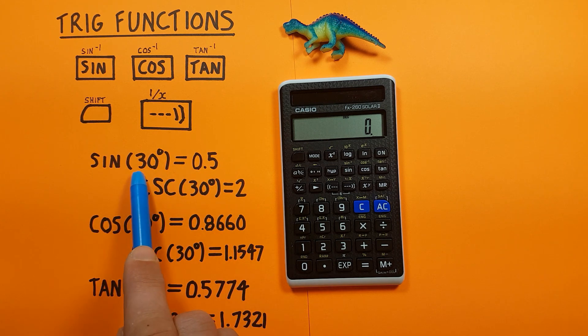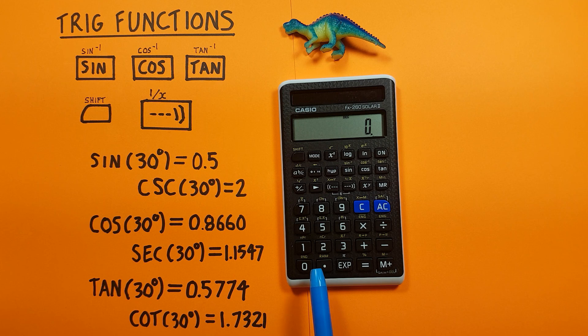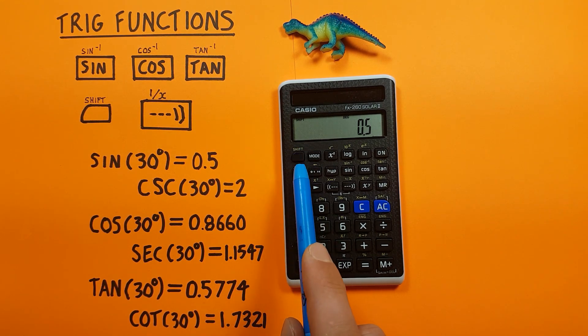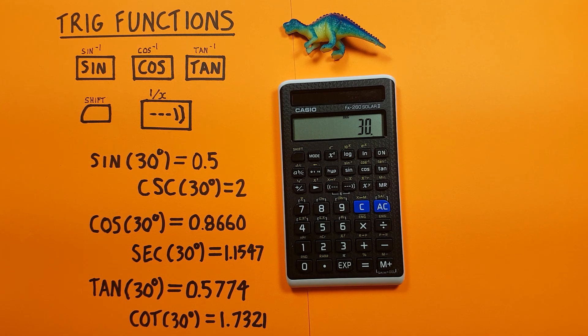So if we wanted to do this right here, let's say arc sine of 0.5: you enter 0.5, and then shift, sine. And this brings us back to 30. So we know sine of 30 degrees equals 0.5, arc sine of 0.5 equals 30 degrees.